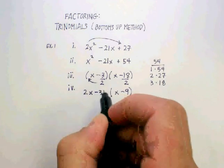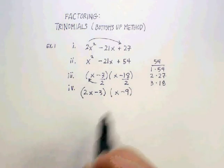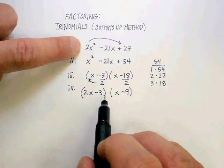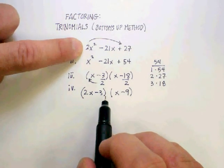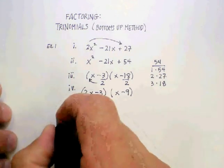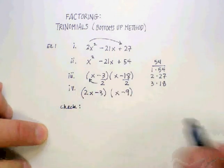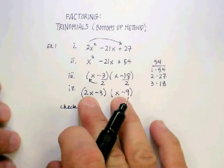You get 2x - 3, and that should be the factors for this original trinomial. Let's just check that just to make sure.